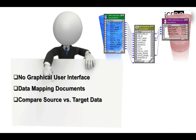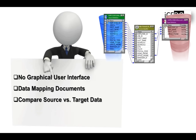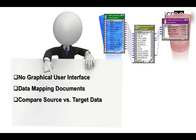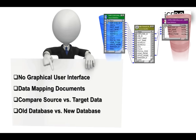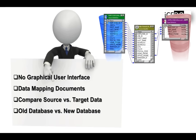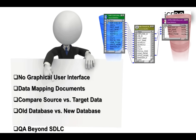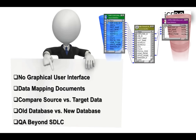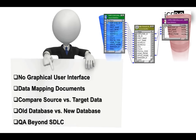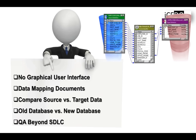The expected versus actual comparisons in data projects are comparisons between source data and target data. In a migration project, the old database has to be compared and reconciled with the newer database, unlike testing of conventional applications. In data-centric projects, data has to be monitored even after development is complete.